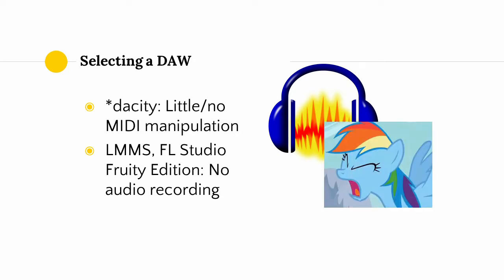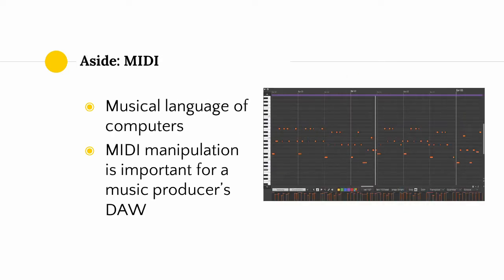For instance, the Audacity variants have little to no MIDI manipulation capabilities, which is fine if all you want to do is voiceover work, but not if you want to do anything involving music. A lot of people watching this might not know what MIDI is. In short, MIDI is the musical language for computers — it's how computers store, read, and communicate information about notes and beats. The point is that if you want to make music, your DAW should be able to manipulate MIDI information.